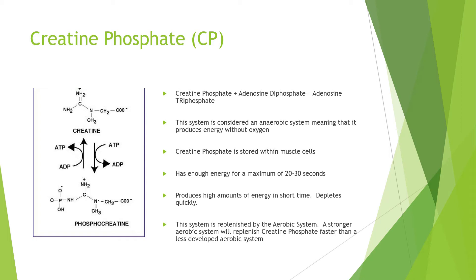It produces a lot of energy in a short amount of time, but depletes very quickly. This system is replenished by the aerobic system. Once you utilize creatine phosphate and all you have left is creatine, you have to replenish that creatine phosphate — the aerobic system does that. A stronger aerobic system will replenish creatine phosphate faster than a less developed aerobic system.